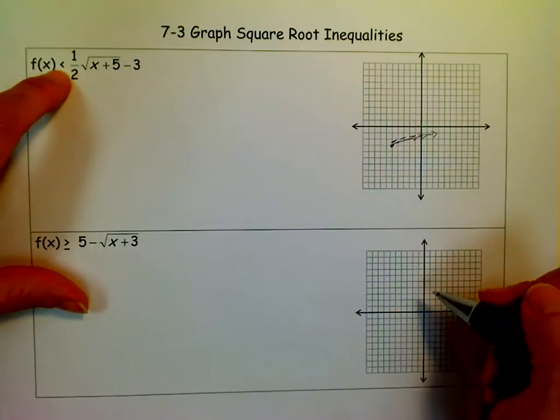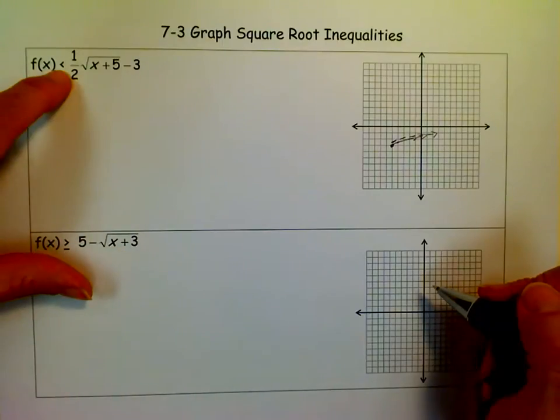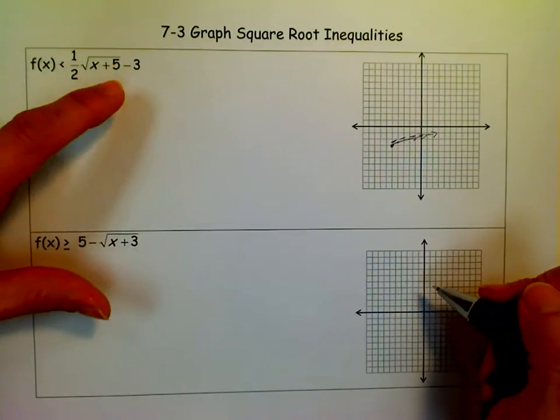So it's less than. Now, some people say if it's less than, you always shade down. Well, not necessarily. Instead of remembering all the rules, if it's less than and it's positive, then you shade down. But if it's less than and the a is negative, then you shade up.